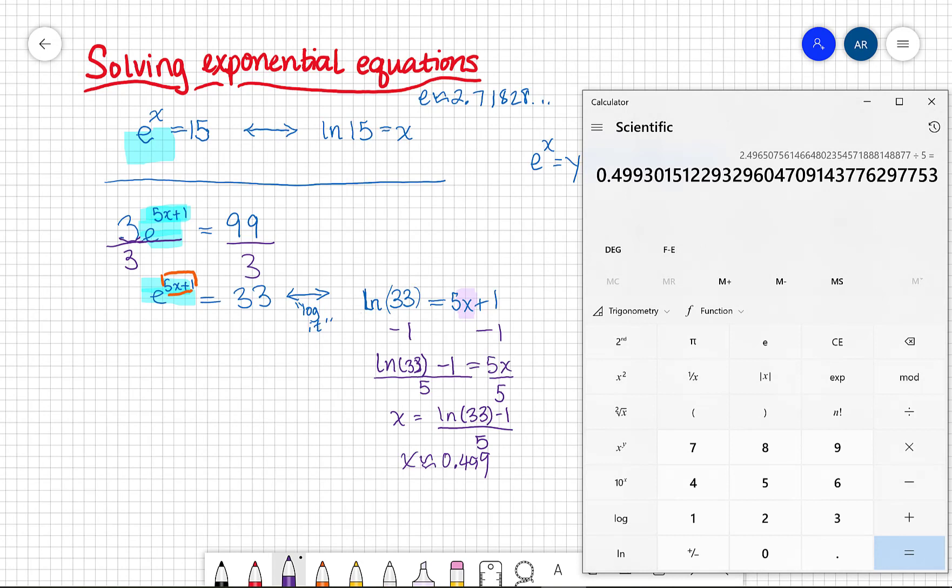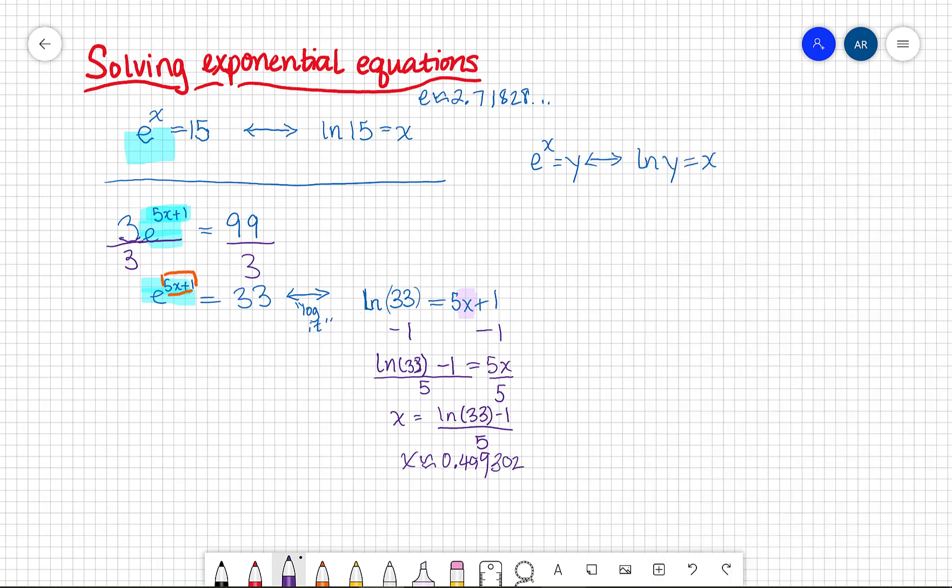I really should keep more decimal places than that. What were the others? Here's 3, 0, 2. Okay. I can check my answer as well. To check my answer, I can substitute this estimate value I'm getting here into my original equation. So I can see, does 3 times e raised to the 5 times 0.499302 plus 1, does that equal 99?